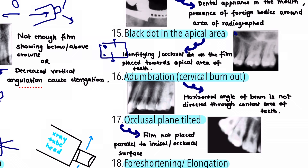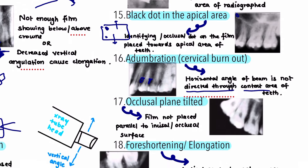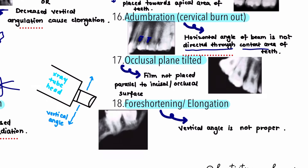The next error is cervical burnout, also known as adumbration. In this, the cervical area looks more radiolucent, which can be due to the horizontal angle of the beam not being directed towards the contact area of the teeth, leading to radiolucent areas between the teeth. These radiolucent areas can sometimes be mistaken for cervical caries or root caries, so always ensure proper horizontal angulation.